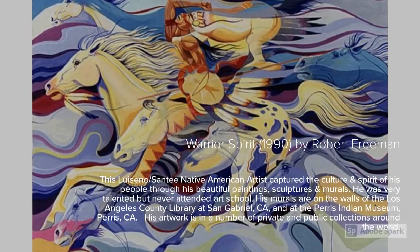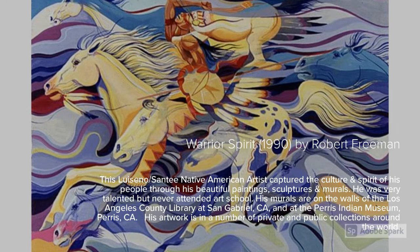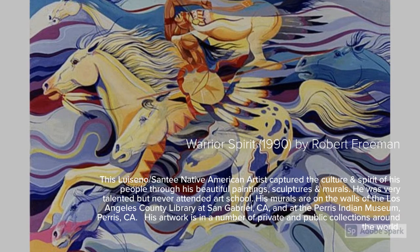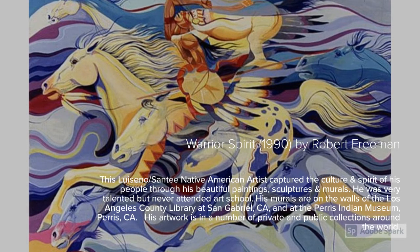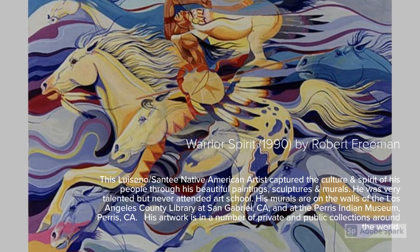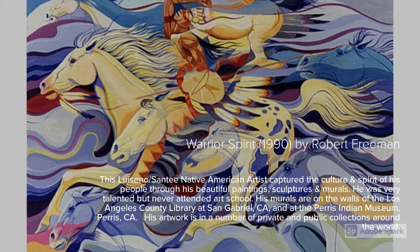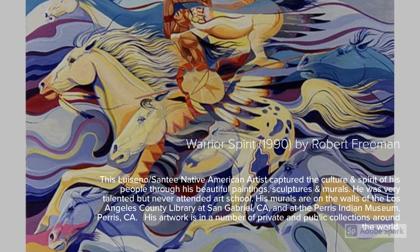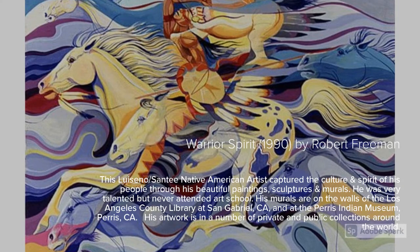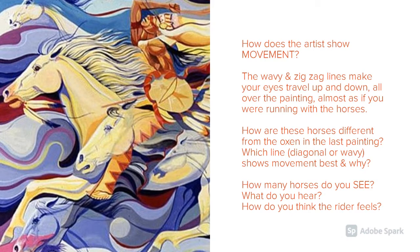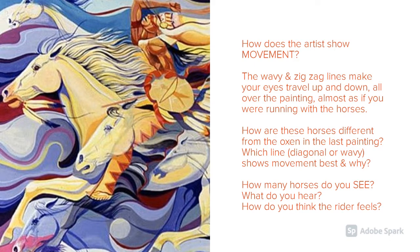Warrior Spirit by Robert Freeman. This Luiseño/Santee Native American artist captured the culture and spirit of his people through his beautiful paintings, sculptures, and murals. He never attended art school, but he was very talented. His murals are on the walls of the Los Angeles County Library, and his artwork is in a number of private and public collections around the entire world. How does this artist show movement? The wavy and zigzag lines make your eyes travel up and down all over the painting, almost as if you were running with the horses.